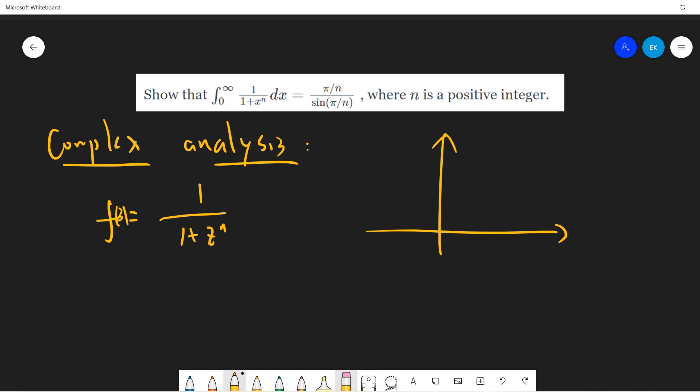So consider f(z) to be 1 over 1 plus z to the n. And consider the shape from 0 to radius r, and this. So our contour will be this, this, and this. So 1, 2, 3. And this angle, let's choose 2 pi divided by n.